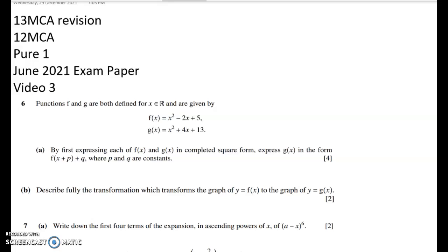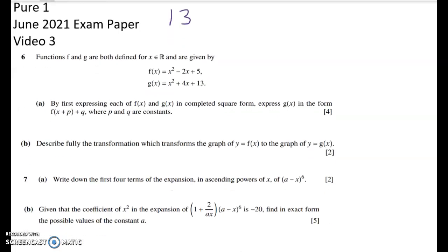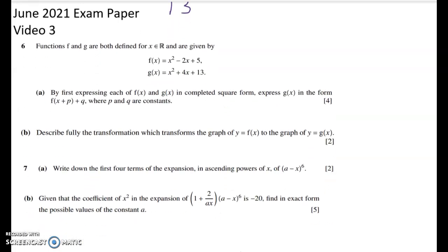Kia ora Year 12 and Year 11. This is the third video going through questions 1-3 from the June 2021 AS Pure 1 paper. In this video I'm going to do two questions: one on functions and graph transformations, and then one on binomial expansion. They're both a little bit harder than the first two videos that I've done, so make sure you have a good go at these questions before I go through them.